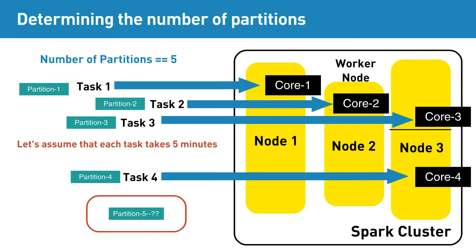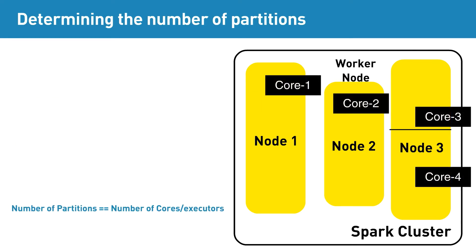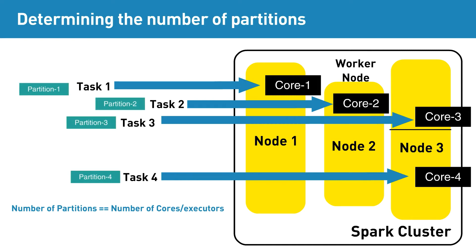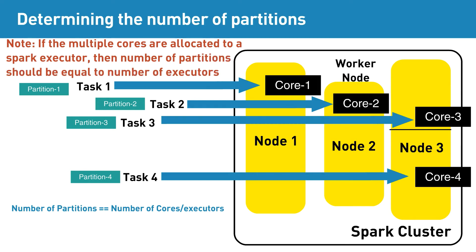This is obviously not an example of how resources should be used effectively. So, the best way to decide on the number of partitions is to keep it equal to the number of cores in the cluster. In our example, since we have a four-core Spark cluster, the number of partitions should also be four — this will process all tasks in parallel and resources will be utilized in an optimal way. Note that you can use rdd.partitions.size to find the size of partitions in an RDD.